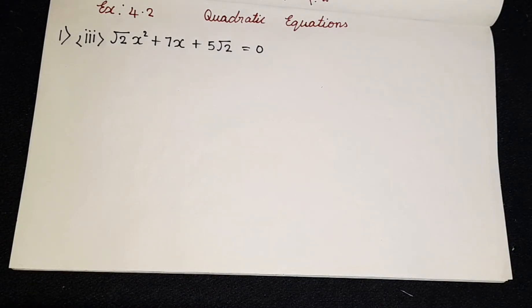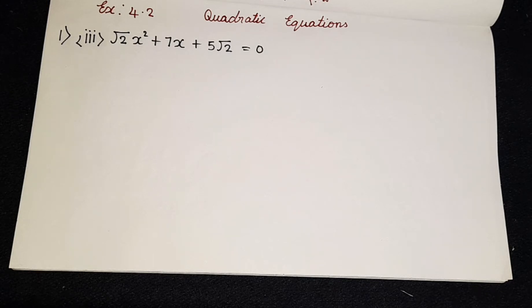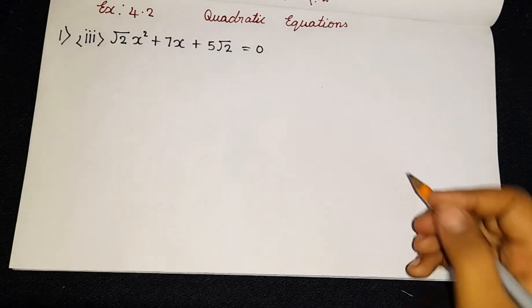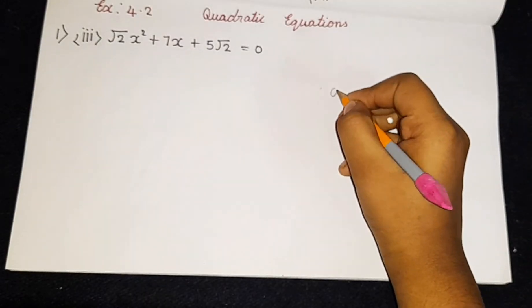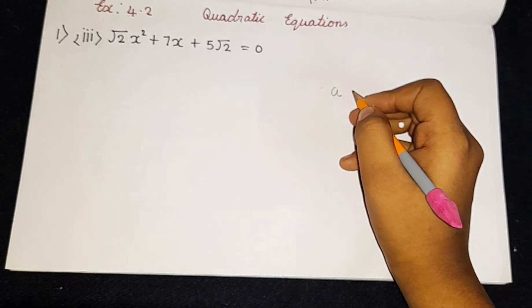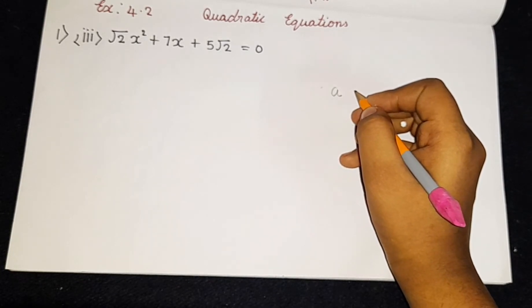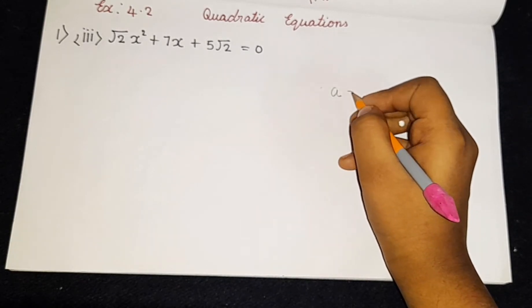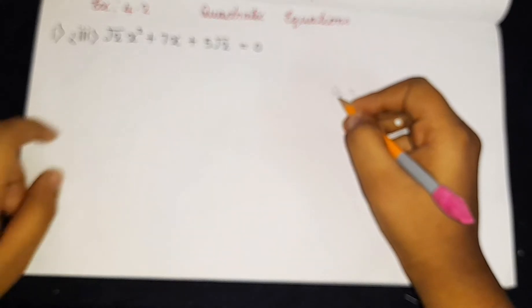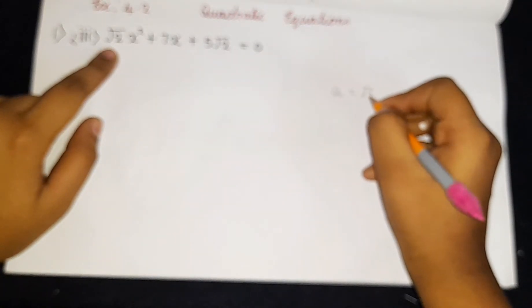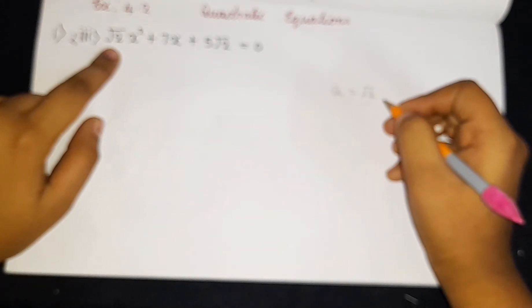As you guys can see, here we have roots. So don't worry — it is really easy. First of all we shall just write the A value and the B value. Whatever I am writing in pencil, that's for rough work, for your understanding. So what is the A value? The A value is root 2. I am just writing the coefficients, not the variables.